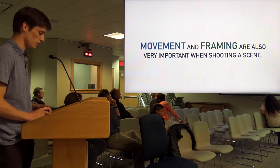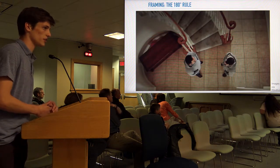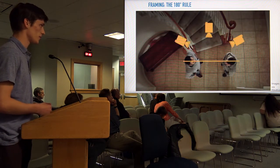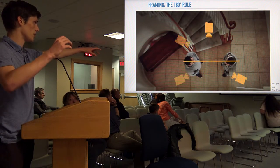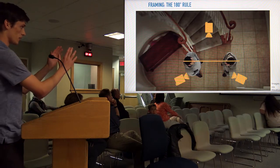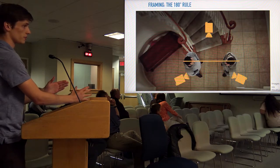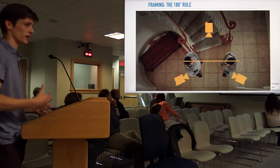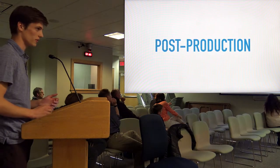Movement and framing are also really important. The 180-degree rule is critical for spatial awareness. It states that if you have three cameras filming a wide and two over-the-shoulder shots, you never want the over-the-shoulder cameras to cross over that line. Because if your actor is on the right side of frame and you switch to the other side, they'll be on the left side of frame — that will disrupt the viewer's spatial awareness, look choppy, and not look good. That's a rule you never want to break.